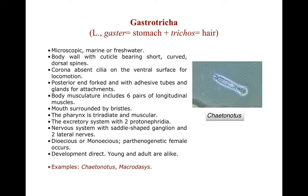The excretory system has two protonephridia. The nervous system has a dumbbell-shaped ganglion and two lateral nerves. They may be dioecious or monoecious, and parthenogenetic females are also found in Gastrotricha. Development is direct — young and adult are alike. Examples are Chaetonotus and Macrodasys. Here you can see Chaetonotus.